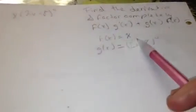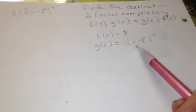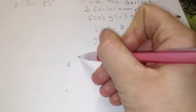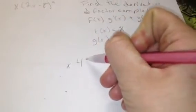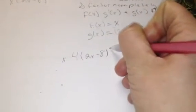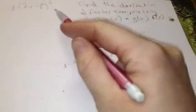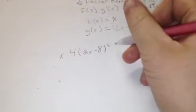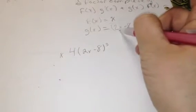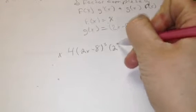Now f of x is x, and g of x is 2x minus 8 raised to the fourth power. I'm going to start by taking x times the derivative of the outside first — bring the power down, 4, times the inside, 2x minus 8, raised to the third power, because you take the power minus 1: 4 minus 1 is 3. Then multiply by the derivative of the inside of g of x, which is 2.